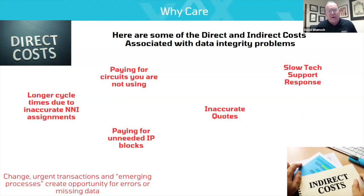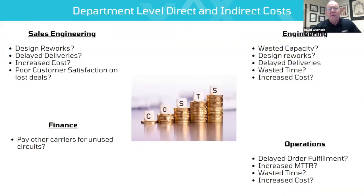We want to understand which direct or indirect cost due to bad data concerns you the most — whether it's paying for circuits you're not using, longer cycle times due to inaccurate IN and I assignments, paying for unneeded IP blocks, inaccurate quotes slowing down the process, or slow tech support responses. Looking at this from a department level, various areas in sales, engineering, finance, or operations can see different direct and indirect costs mount up from data integrity issues.